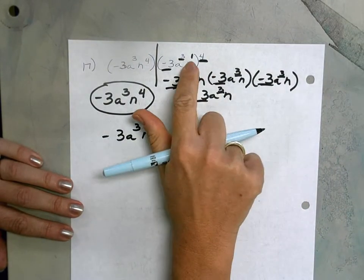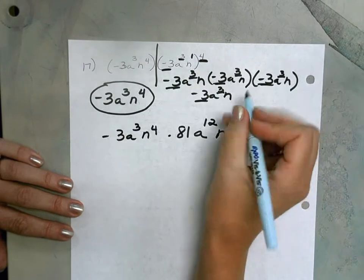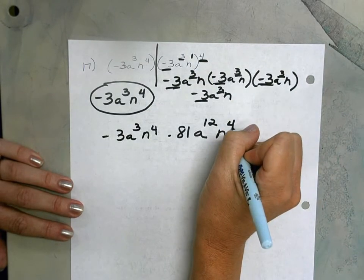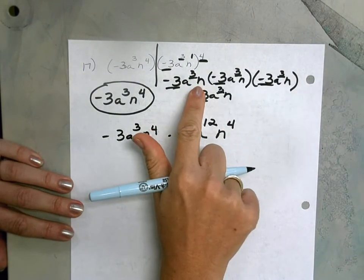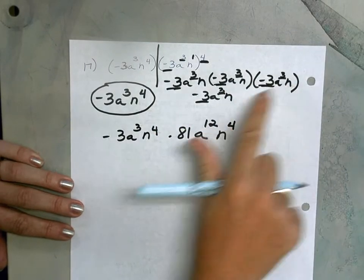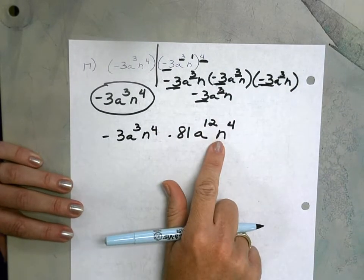And then our n. Power to a power, 1 times 4, our exponent will be 4. Or how many n's are we multiplying? 1, 2, 3, 4 n's. n to the 4th.